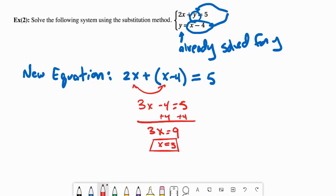Now that we have x is equal to 3, we go back to our system. 2x plus y equals 5, and y equals x minus 4. And we want to plug 3 in anywhere we see x. And when we do this, we expect both of the equations to produce the same value for y.